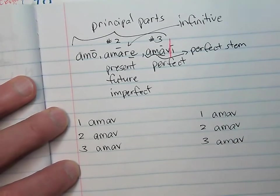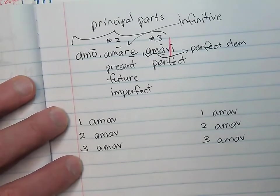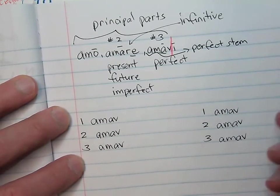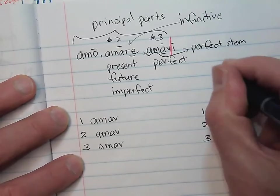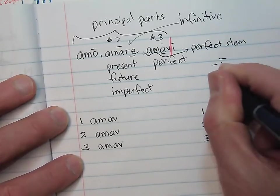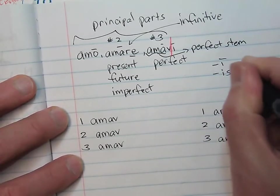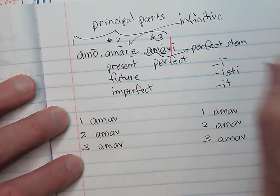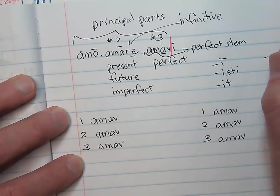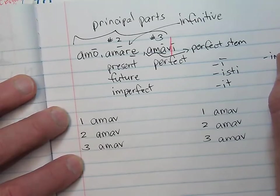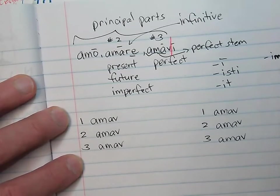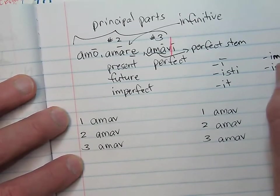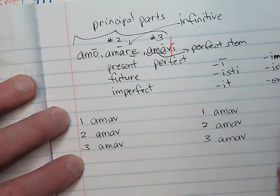All right. Now I need some endings. It turns out that the perfect tense has its own unique set of endings. Here they are: hyphen i, hyphen isti, hyphen it, hyphen imus, hyphen istis, and hyphen erunt.